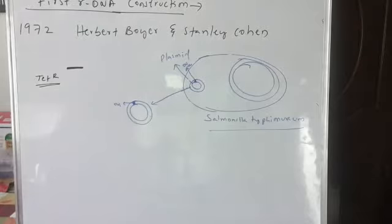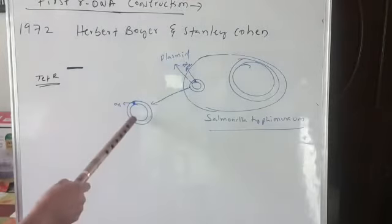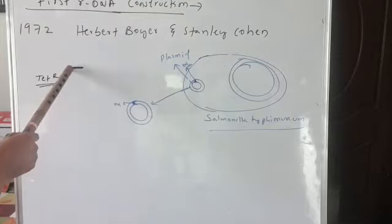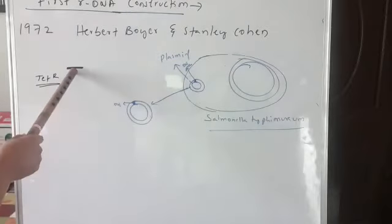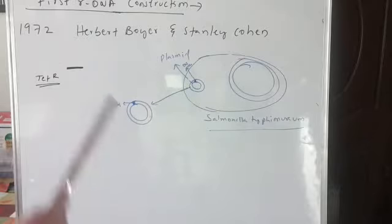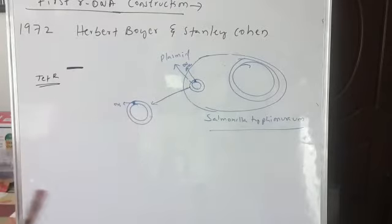What is a vector? A vector is any DNA molecule which can carry the foreign gene, or the gene of interest, or the desired gene into the host. Such a kind of DNA molecule is called a vector.